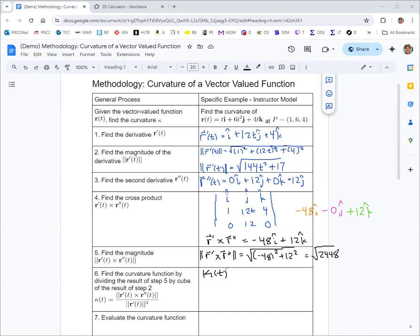What you do is take the magnitude of the cross product from step five, √2448, and divide by the magnitude of r prime from step two, but you cube that. We got magnitude of r prime was √(144t² + 17), and we're going to cube that. You can combine the square root and the exponent of three and just get an exponent of three halves. So that is the curvature function.